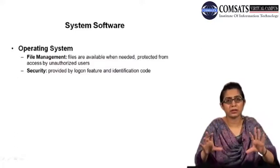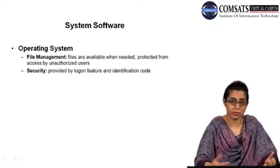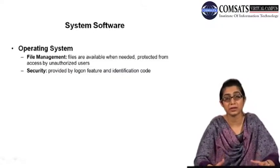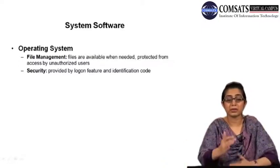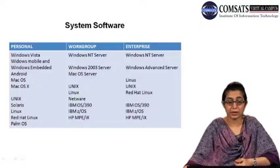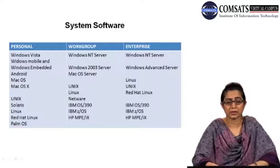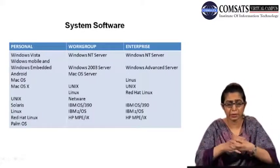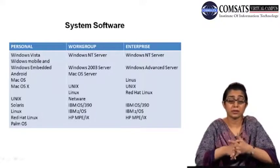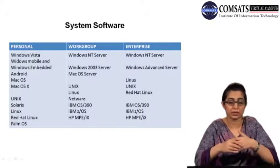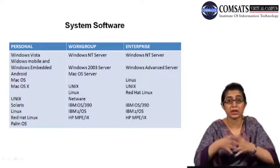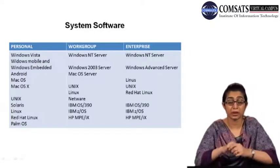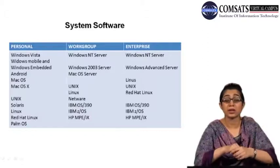We looked at the very basic functionalities of the operating system that almost all operating systems provide. After that, we'll have a look at the different kinds of operating systems. At the personal level, you have Windows — and now you have Windows 7, Windows 8, as well as Windows Mobile and Windows Embedded, also called Windows CE — these are operating systems used for handheld mobile devices.